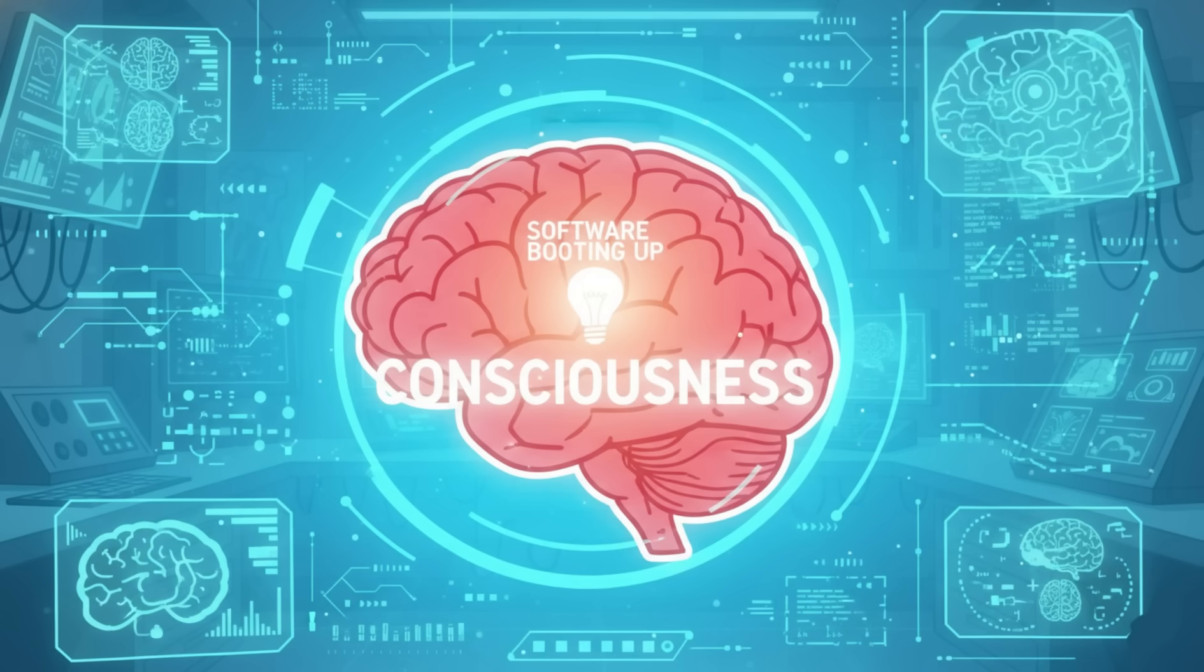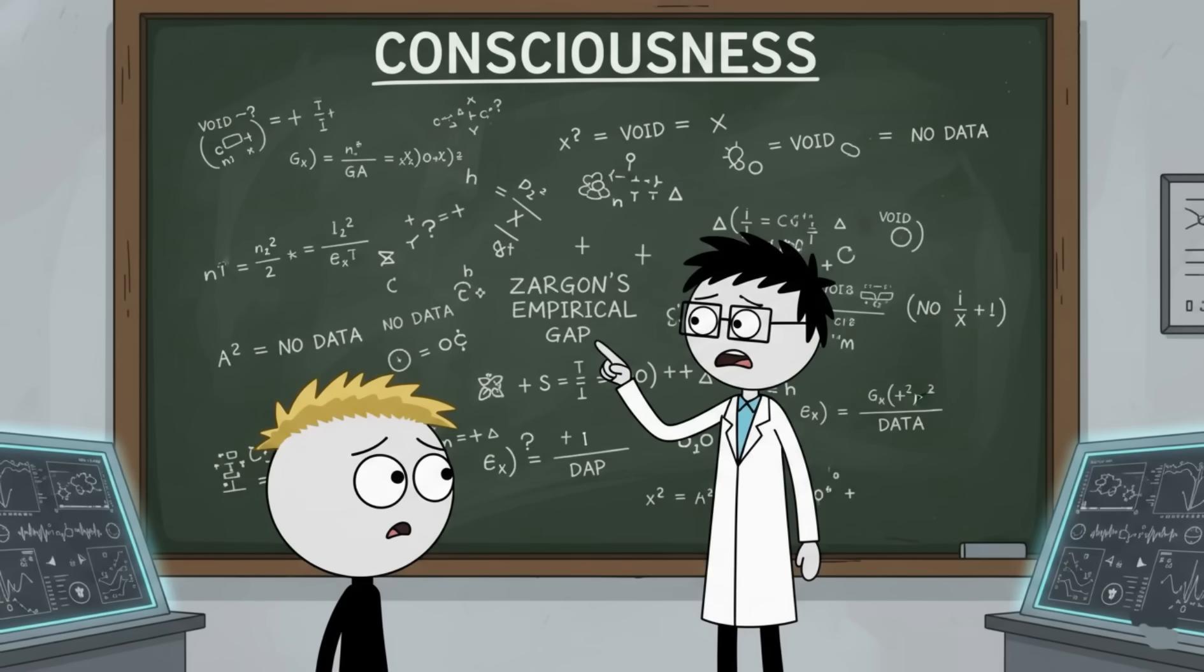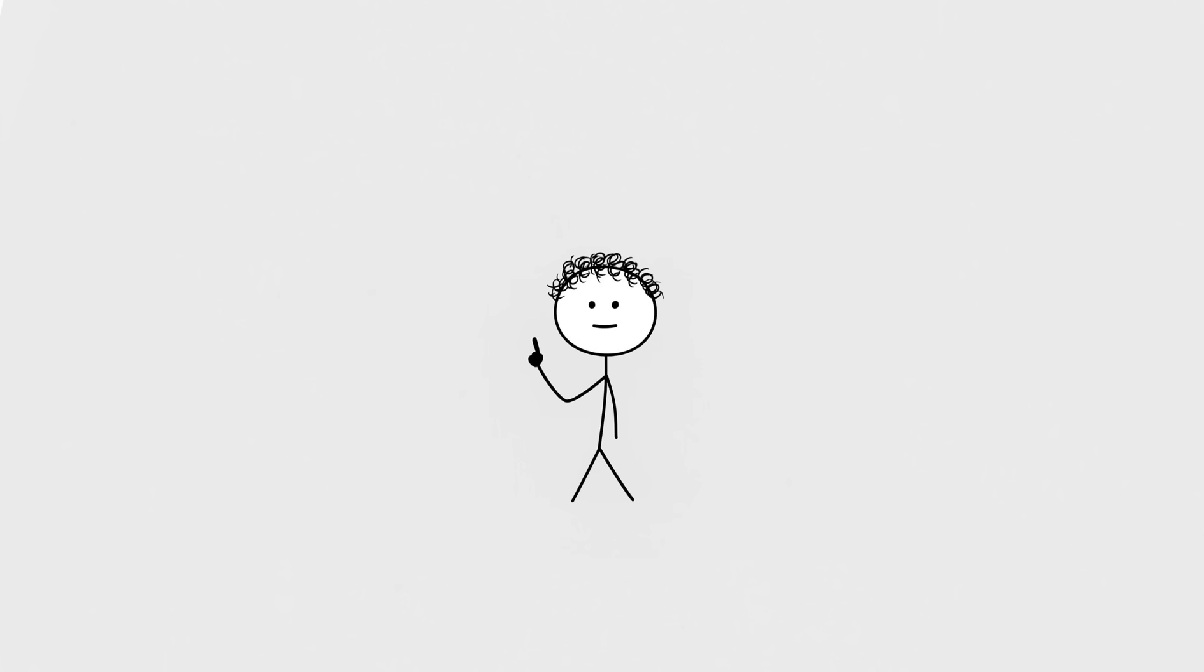Some theories say consciousness is an emergent property, the brain's version of software spontaneously booting up. Others say it's everywhere, a fundamental part of the universe like gravity but weirder. And then there's the possibility that consciousness is something we don't even have the scientific language to understand yet. It's like trying to describe Wi-Fi signals to a medieval farmer. They're not dumb, you're just speaking witchcraft.